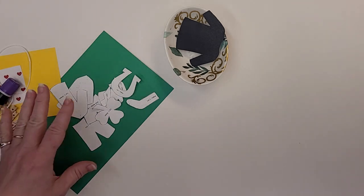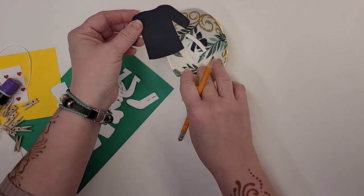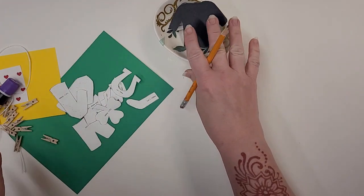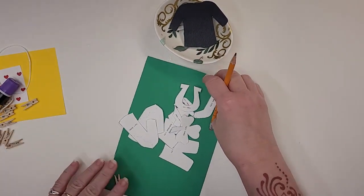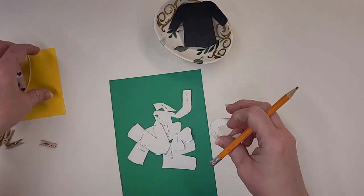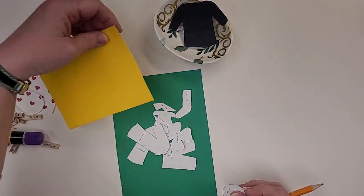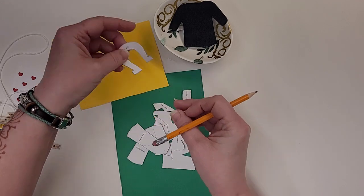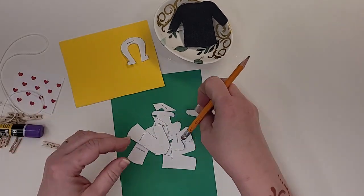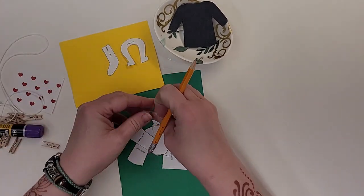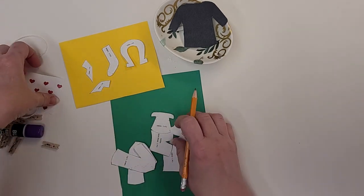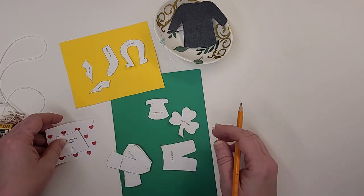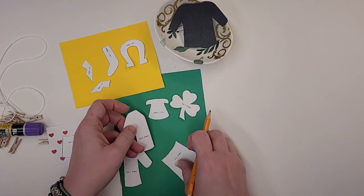Okay. So I've got all my black pieces cut out here. I've got all my white templates cut out. Now what I'm going to do is I am going to take a pencil and I'm going to trace around these and then cut the shapes out of the right colors.